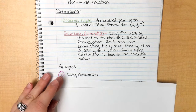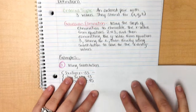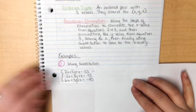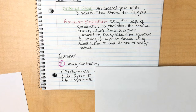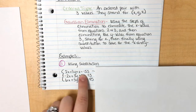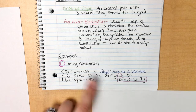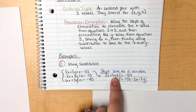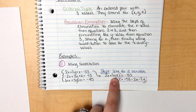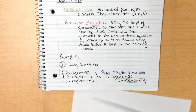First, let's use substitution. This is my first equation. If you remember back from the last step of systems, when we solve using substitution, we must get one of the variables by itself. I used my first equation and solved for z. In order to solve for z, I had to subtract 2x and subtract 7y over to the other side, which gives us negative 53 minus 2x minus 7y. That is the first step of substitution.